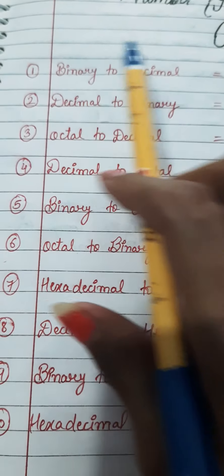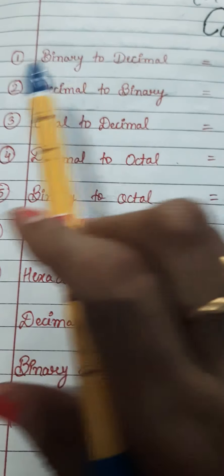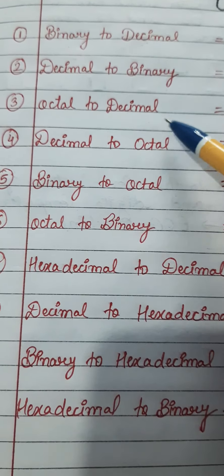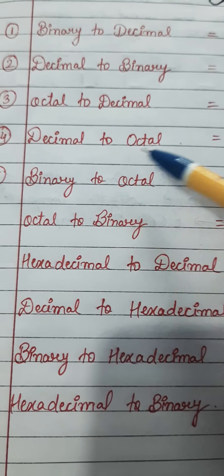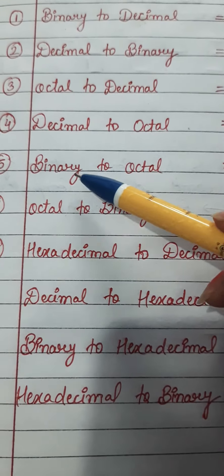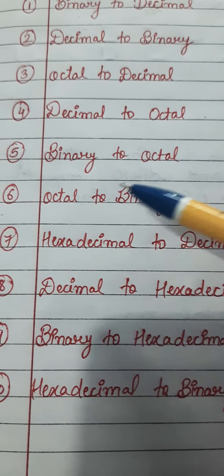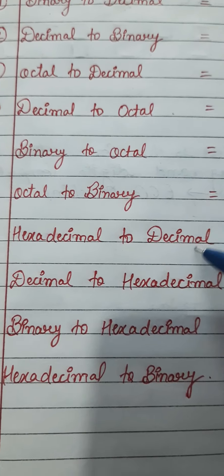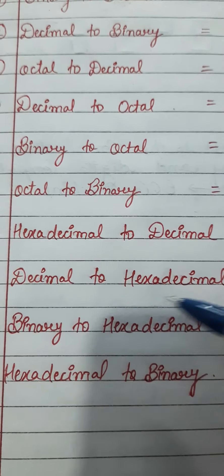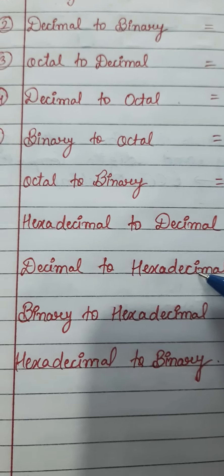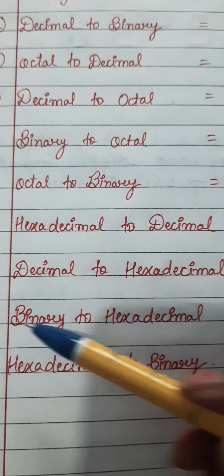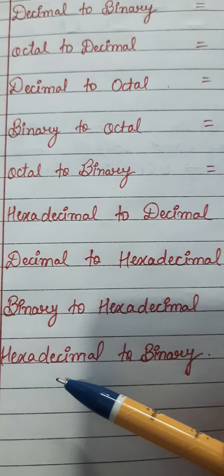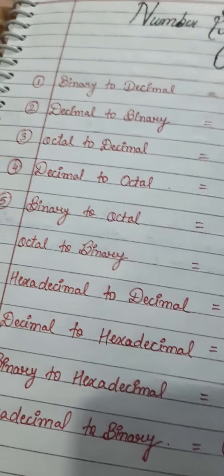First is binary to decimal, decimal to binary, octal to decimal, decimal to octal, binary to octal, octal to binary, hexadecimal to decimal, decimal to hexadecimal, binary to hexadecimal, and last is hexadecimal to binary.